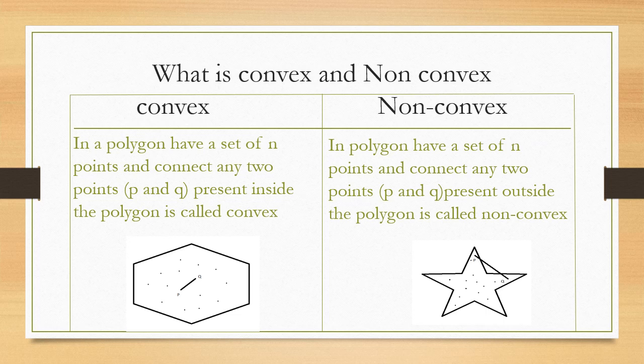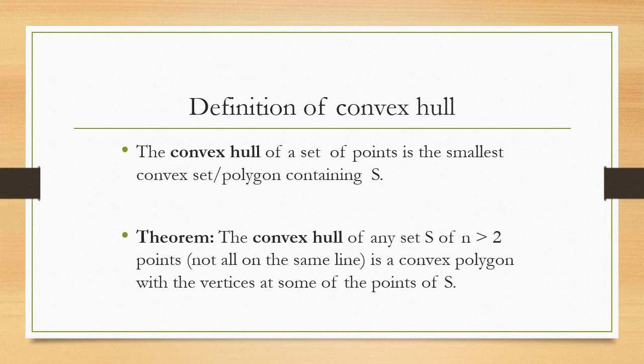This is the polygon — we have a set of endpoints, and these endpoints connect any two points P and Q which are present inside the polygon, which is called convex. This is also a polygon where the endpoints connect two points and the line passes outside the polygon, which is called non-convex.